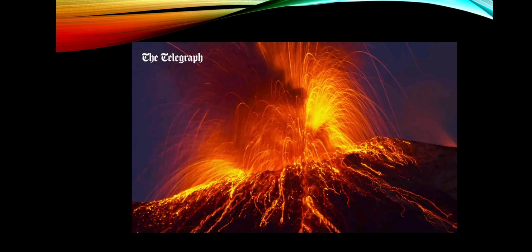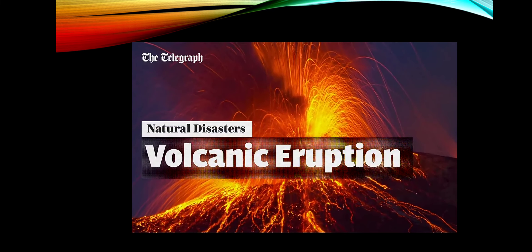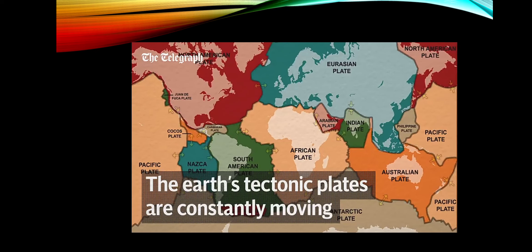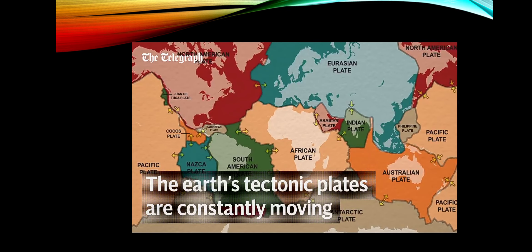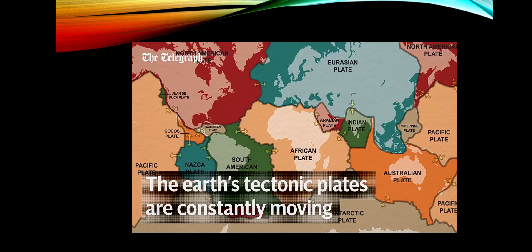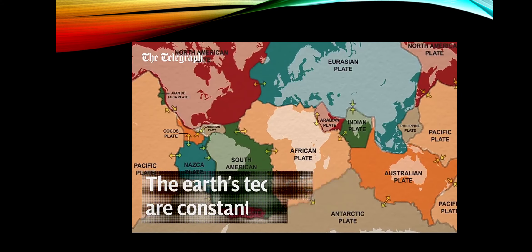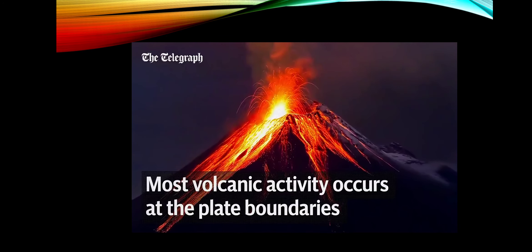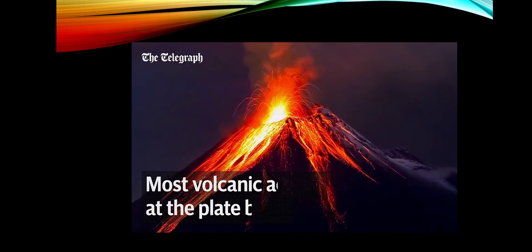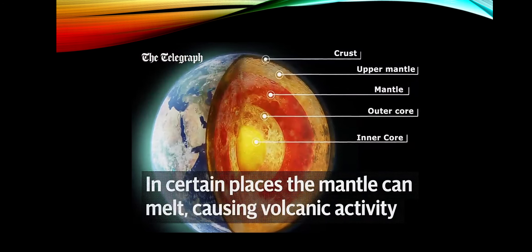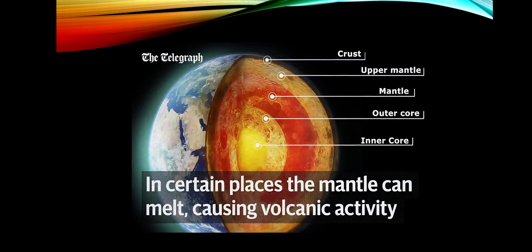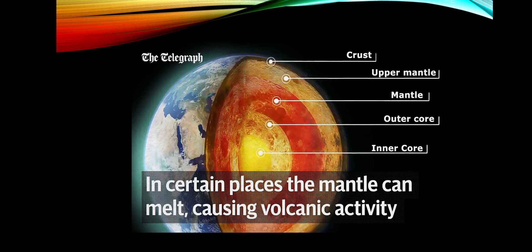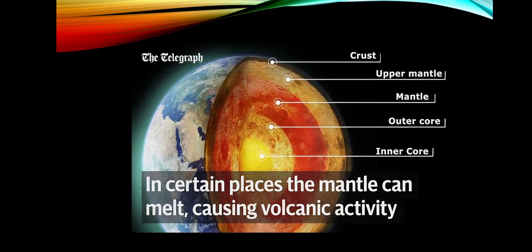A third cause: the surface of the earth — the crust — is comprised of a number of tectonic plates, which are constantly moving slowly at about the rate your fingernails grow. Most volcanic activity occurs at the places where these plates meet, called plate boundaries. The large layer of rock beneath the earth's crust is called the mantle. This is mostly solid, but in certain places it can melt to become magma, causing volcanic activity.